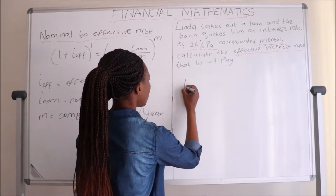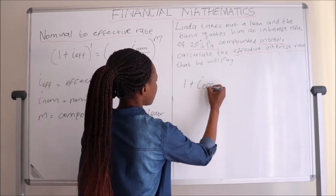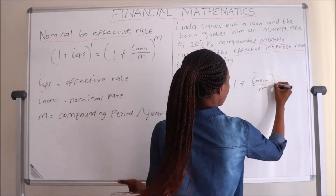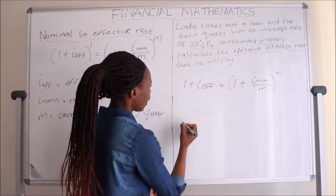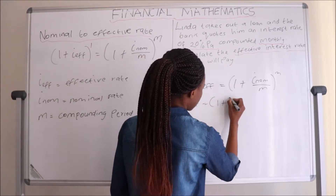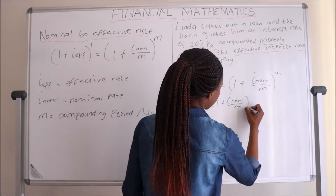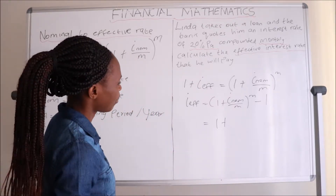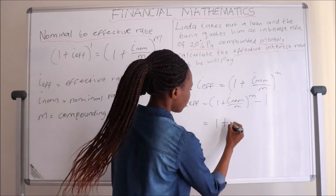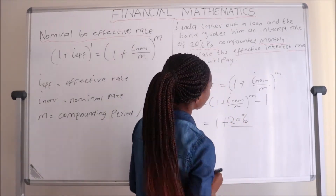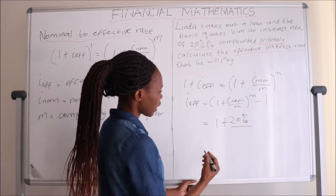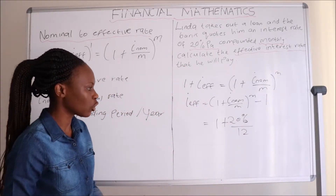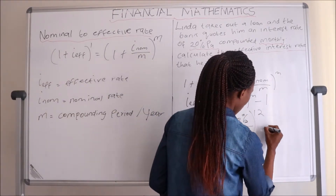From our equation we have: I_effective = (1 + I_nominal / M)^M − 1. The interest rate quoted at the bank — 20% — is the nominal interest rate. It has been compounded 12 times in a year, meaning monthly, so M = 12. Remember, M is the number of times it has been compounded annually. We then have an exponent of 12, minus 1.